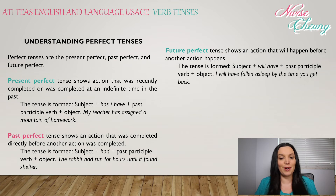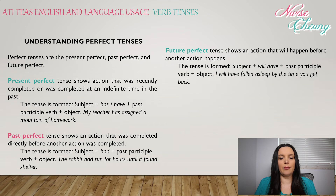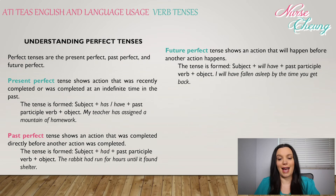Perfect tenses are the present perfect, past perfect, and future perfect. Present perfect tense shows that an action is recently completed or was completed at an indefinite time in the past. It is formed: subject + has/have + past participle verb + object. For example: 'My teacher has assigned a mountain of homework.' Past perfect tense shows an action completed directly before another action. It is formed: subject + had + past participle verb + object. For example: 'The rabbit had run for hours until it found shelter.'